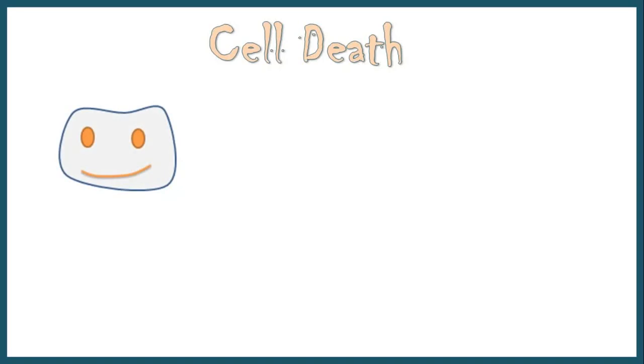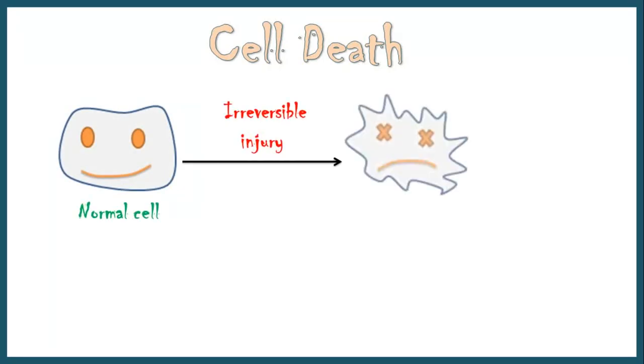Hello. Today I'm going to discuss about cell death. This is the next part of my cell injury video. If you haven't watched that video, please watch it first, so that this video would make more sense. As we know, when a normal cell undergoes irreversible injury, it loses its normal functions and becomes a dead cell. There are two types of cell death: necrosis and apoptosis.